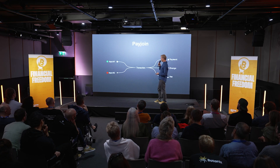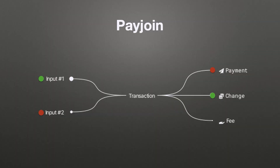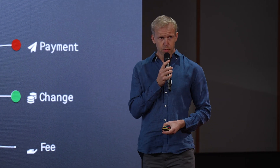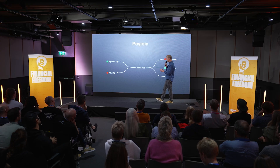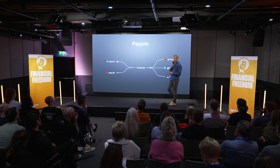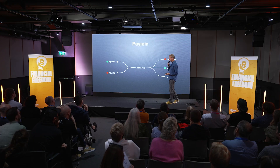Let's have a look at PayJoin. Say I was paying a merchant and that merchant agreed to contribute an input to the transaction I was making. This not only breaks the common input ownership heuristic mentioned earlier, but also obfuscates the payment amount, since the total does not necessarily increase by the amount that the merchant has added. It's a useful technique, but the incentives mean it hasn't been greatly adopted yet — the merchant has to run a hot wallet. We are now seeing development of PayJoin version 2, which will hopefully lead to greater use.